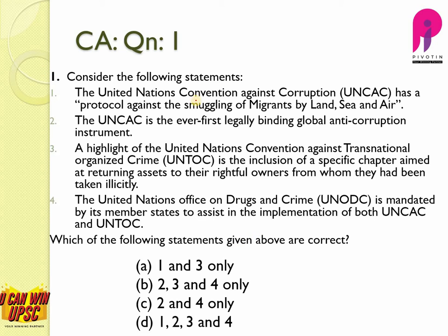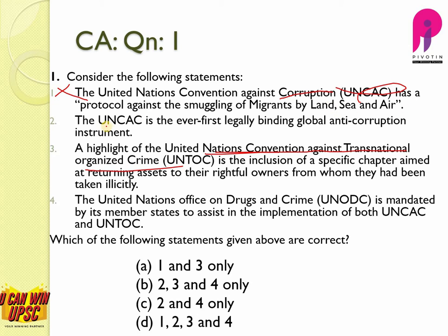Question number 1. The United Nations Convention Against Corruption has a protocol against smuggling of migrants by land, sea and air. Actually, this is wrong because it is not UNCAC but UNTOC — the United Nations Convention Against Transnational Organized Crime — which has a protocol against smuggling of migrants by land, sea and air.